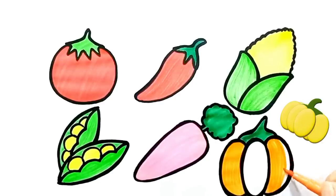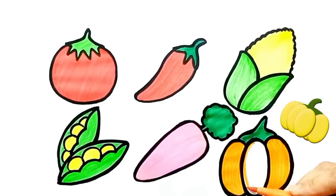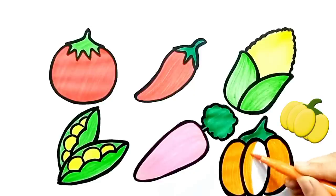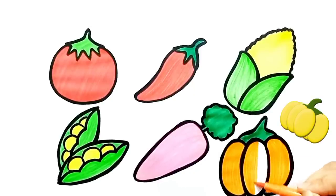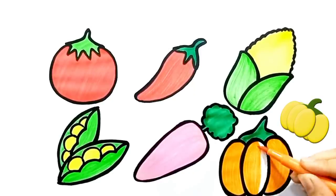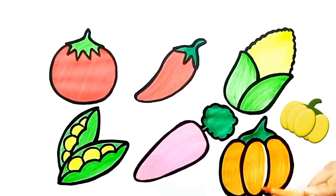All around the mulberry bush, the monkey chased the weasel. The monkey thought it was all in good fun. Pop goes the weasel, a penny for a spool, a thread, a tuppence for a needle. That's the way the money goes. Pop goes the weasel. Take care till next video.